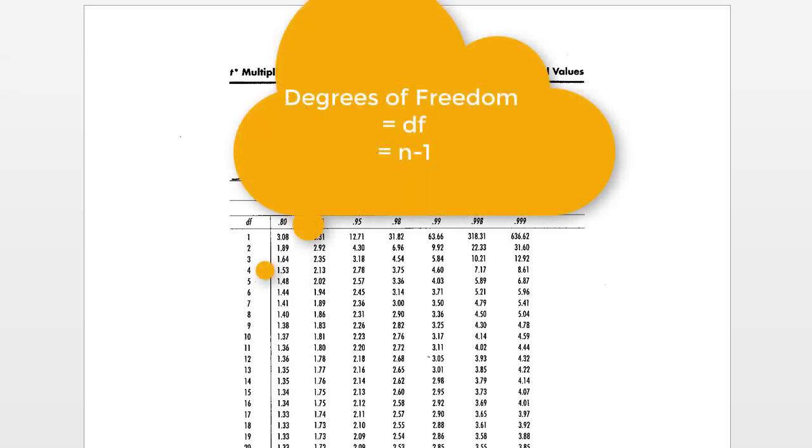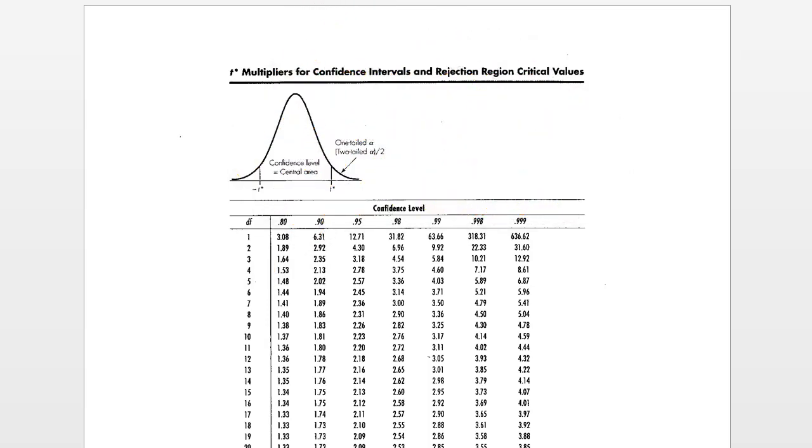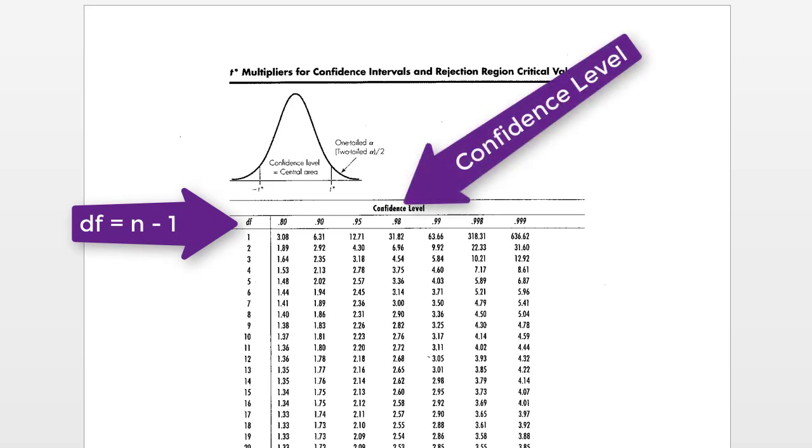So this table is meant to help you look up what the multiplier would be for your given curve and your desired confidence level. It's pretty straightforward to use. You'll notice that the degrees of freedom are shown on the left-hand side of the table and then the confidence level is shown at the top.